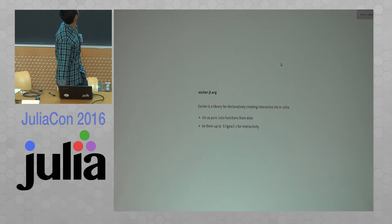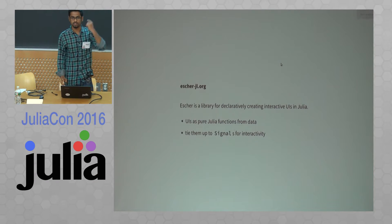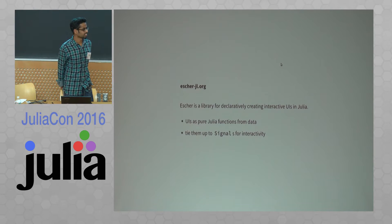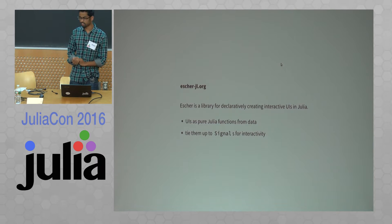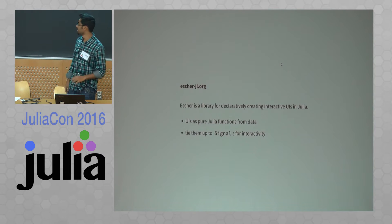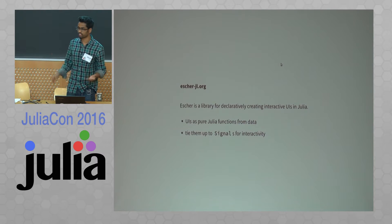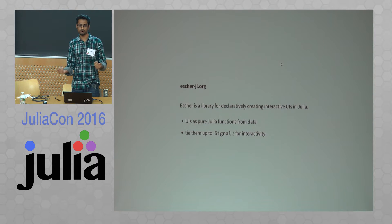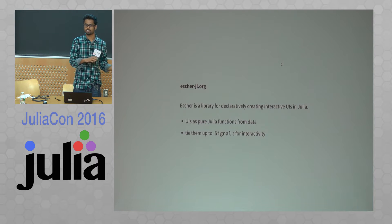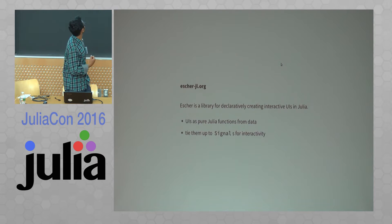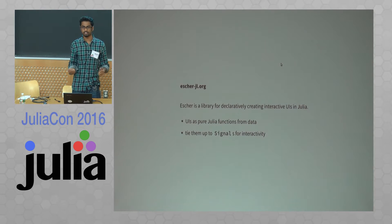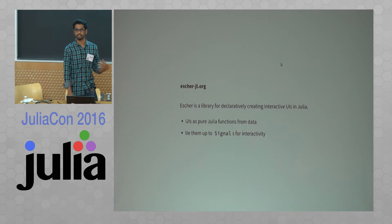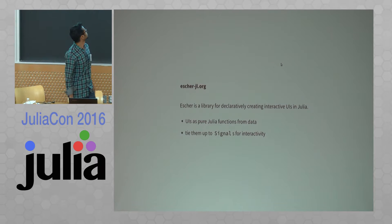If you don't know about Azure, you can visit AzureJL.org. It's basically a framework for declaratively creating interactive UIs. You can express UIs as pure functions which take whatever Julia data you have and give out the corresponding UI. You can use signals from the Reactive.jl library to create interactive UIs just by creating signals of UIs.